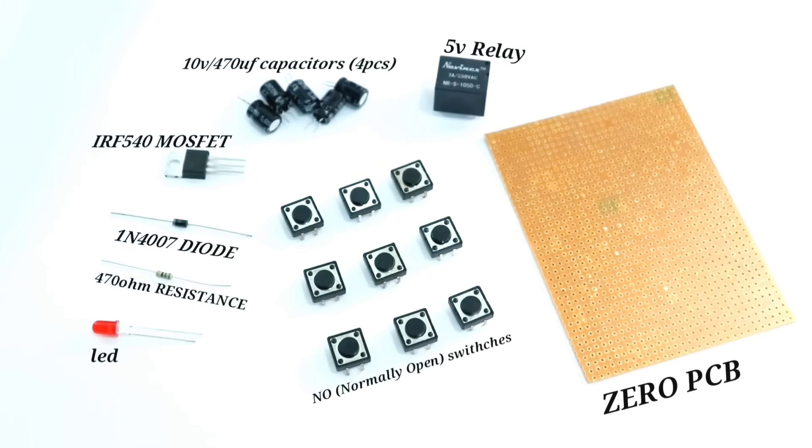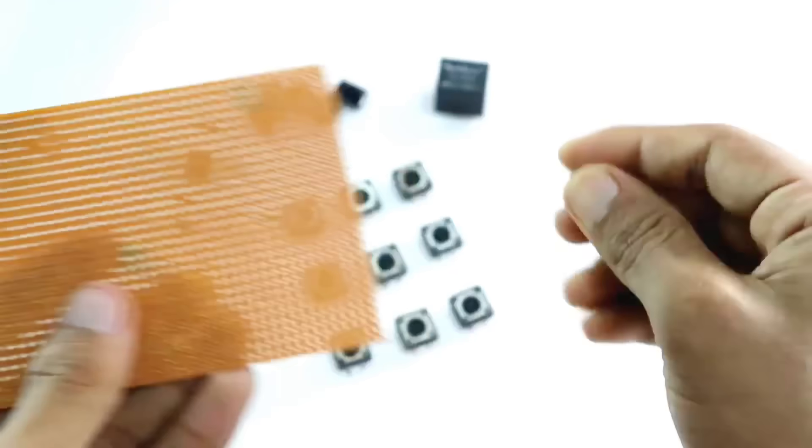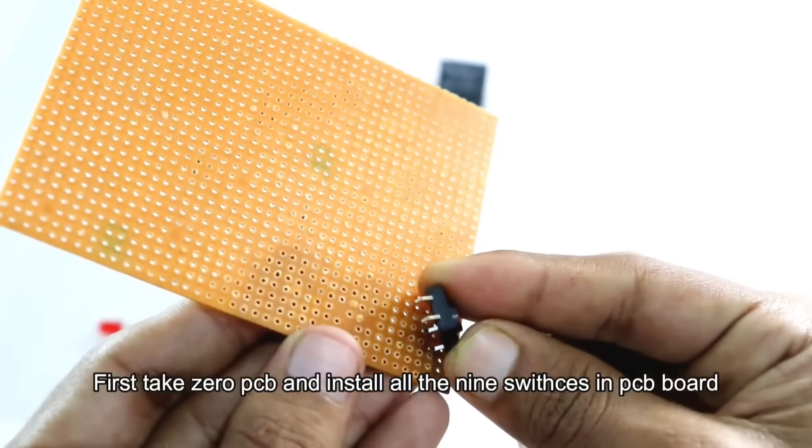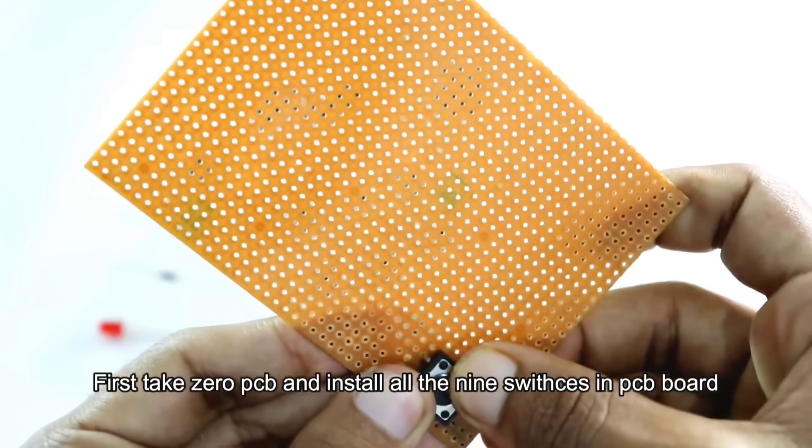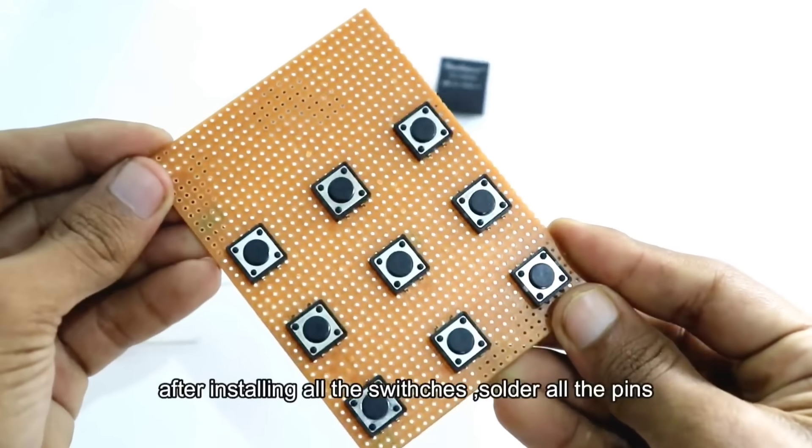So, friends, to build this project, we've used some essential and simple components. First, we took a blank PCB board and installed nine tactile switches on it. You can fully customize this setup based on your needs, for example, adding more switches, changing the layout, or even using a different-sized PCB.